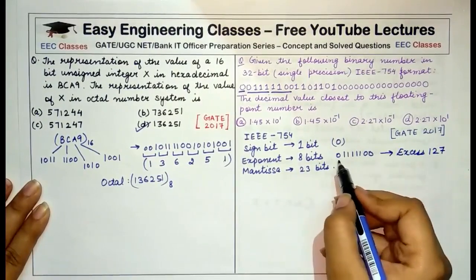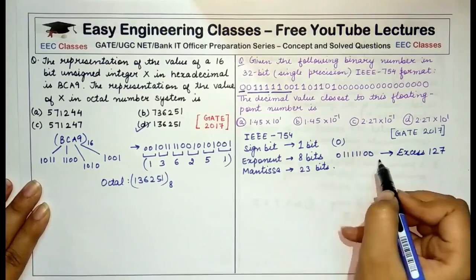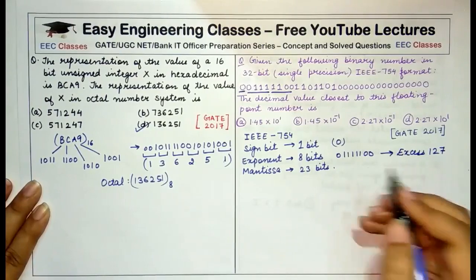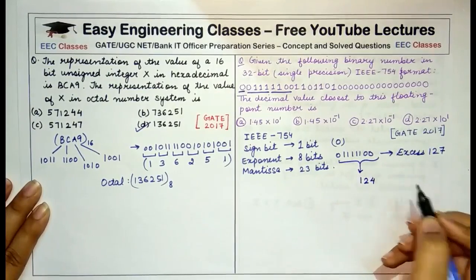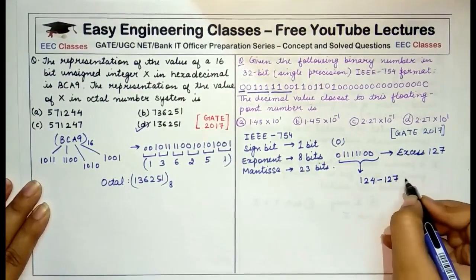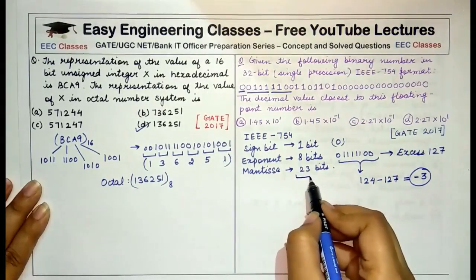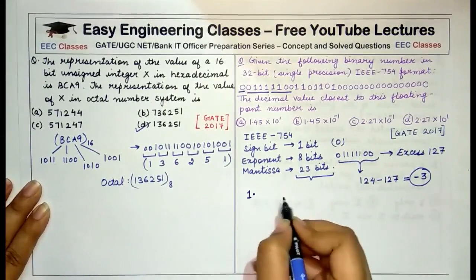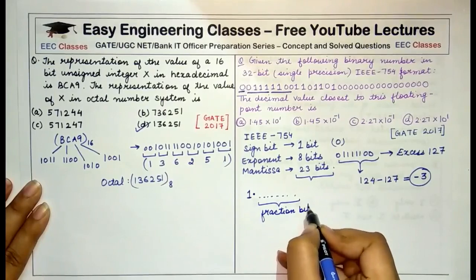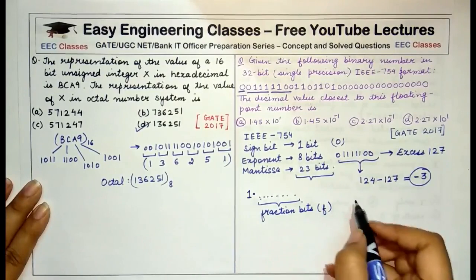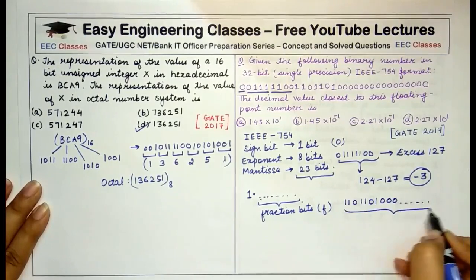The actual exponent is −3. For the mantissa, it is represented as 1.F where F are the fraction bits. In this case the mantissa bits are 11011010... followed by zeros to make 23 bits total. In implicit normalization form, the mantissa is written as 1.1101101.